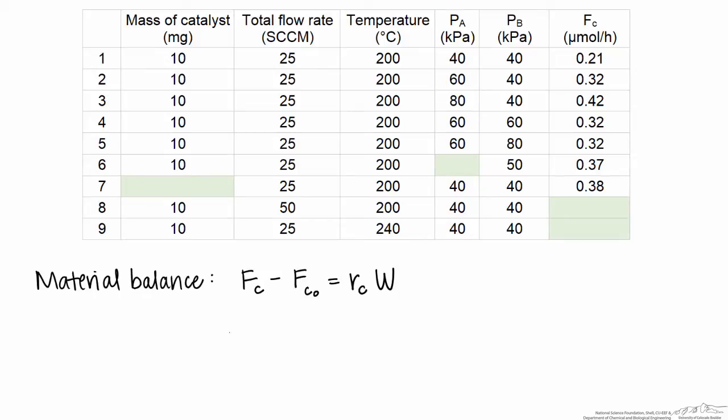To do this problem, we can write a material balance on component C, where the flow rate of C out of the reactor minus what we flow in, and here we're not flowing anything in, is equal to the rate with which C is produced in the reactor times the amount of catalyst, if this rate is defined on a per-mass of catalyst basis. The nice thing about a differential reactor is the conditions are not changing in the reactor, they're remaining at very close to the inlet conditions, so this reaction rate is a constant term.